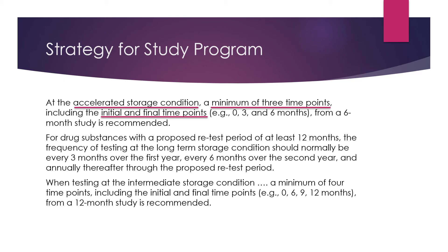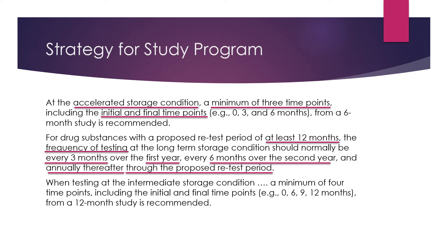For drug substances with a proposed retest period of 12 months, the frequency of testing should normally be every 3 months during the first year, every 6 months during the second year, and annually thereafter throughout the proposed retest period. When testing at intermediate conditions, a minimum of four time points — including the initial and final — that is 0, 6, 9 and 12 months from a 12-month study is recommended.